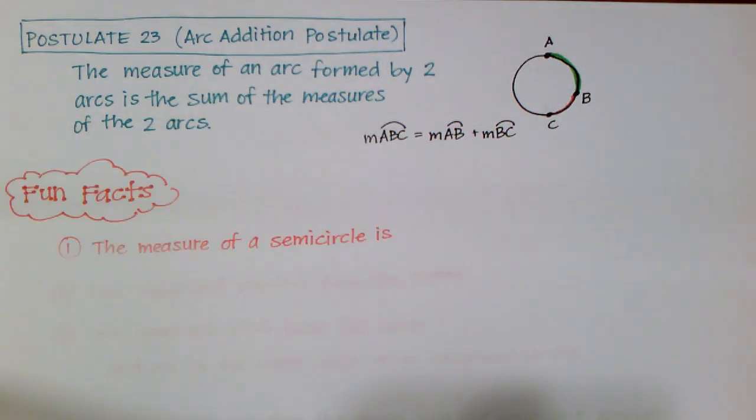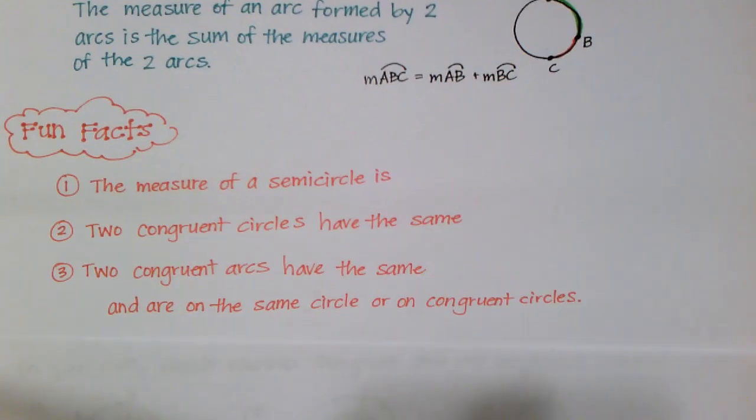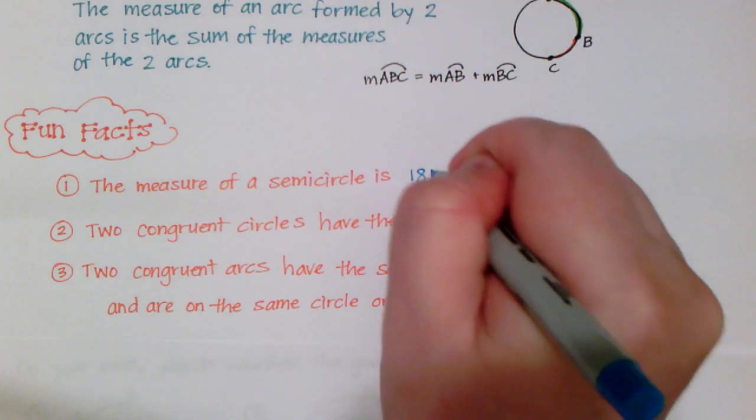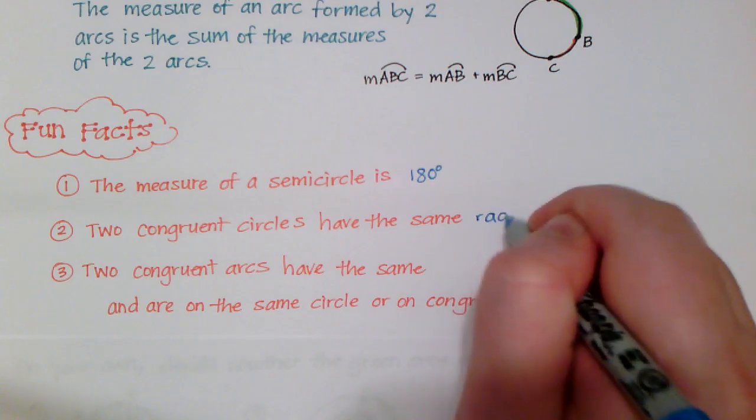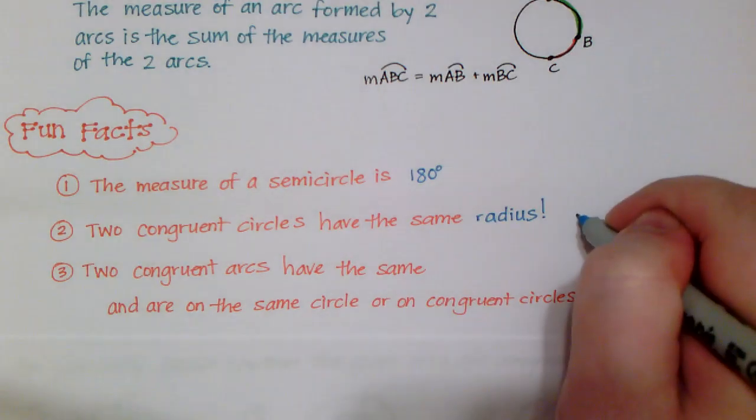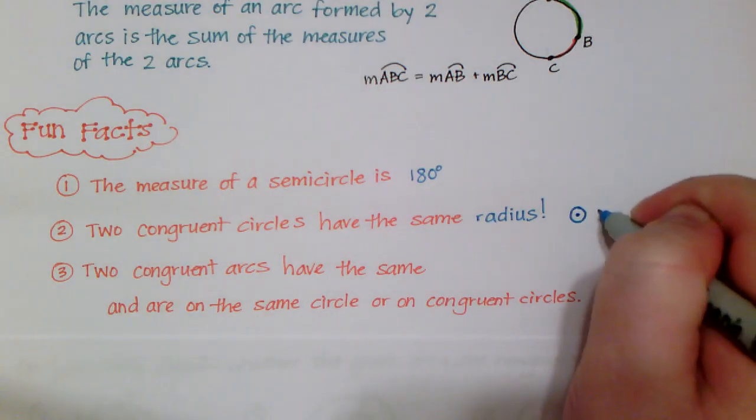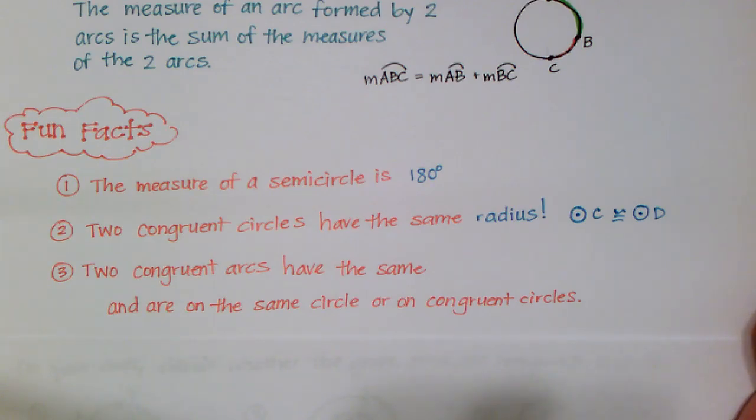Now, we're going to go over some fun facts that I have for you. Here's my three fun facts that I want to share. The measure of a semicircle is 180 degrees. We talked about it's only going halfway around because its endpoints on the circle are the same as the diameter. Two congruent circles have the same radius. And the way that we're going to write that two circles are congruent would be circle C is congruent to circle D. Again, they're named after their center point.